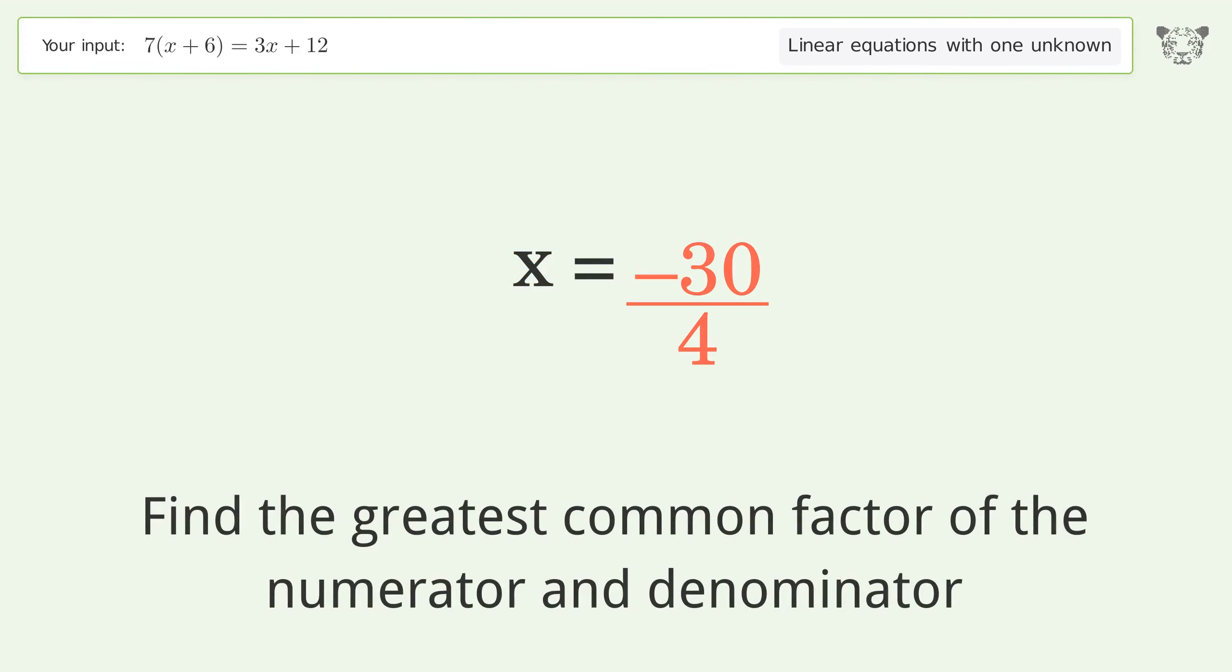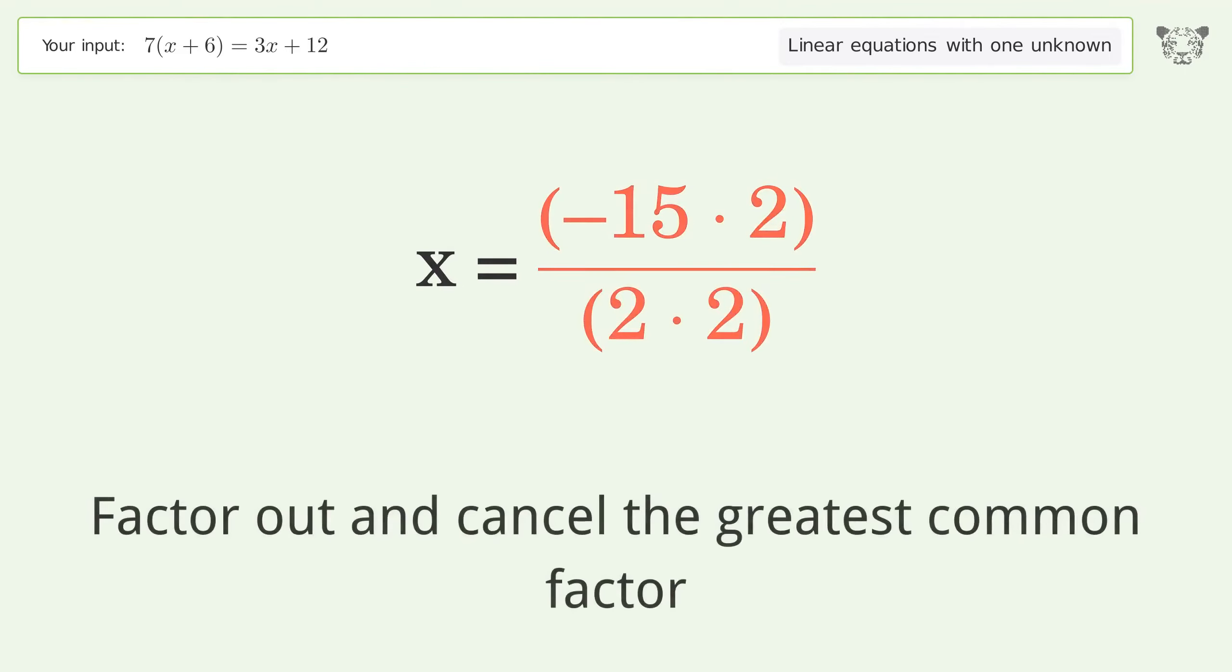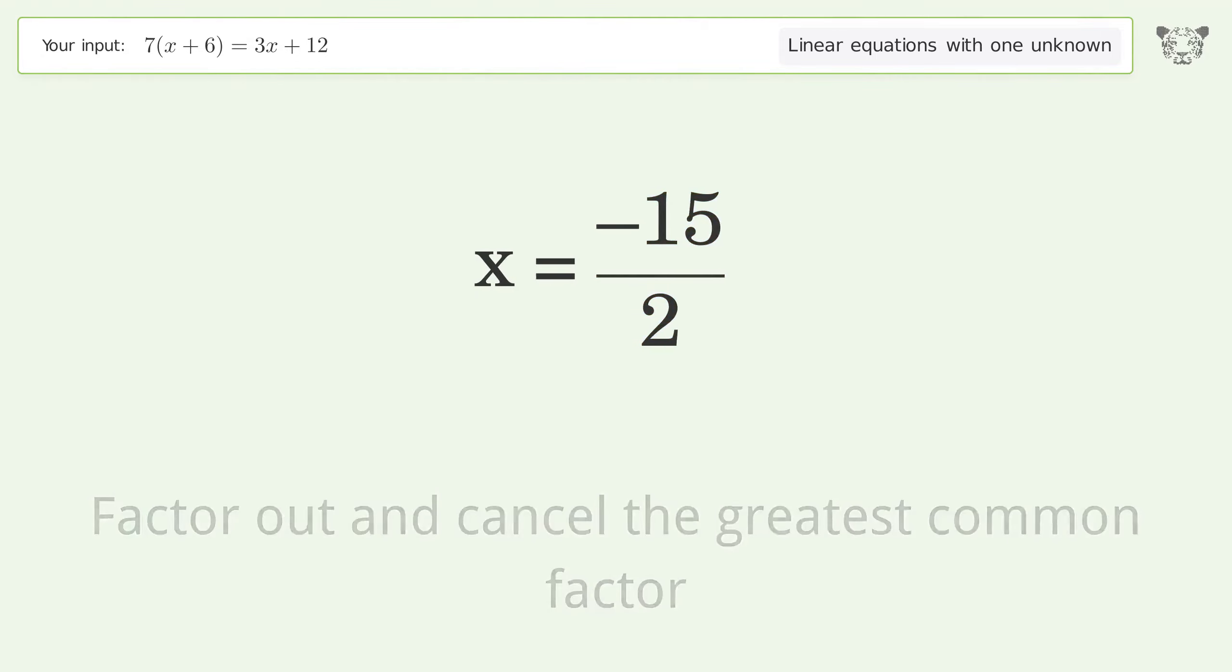Find the greatest common factor of the numerator and denominator. Factor out and cancel the greatest common factor. And so the final result is x equals negative 15 over 2.